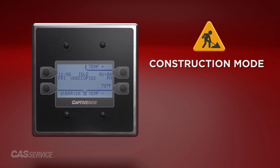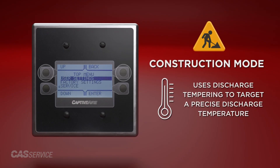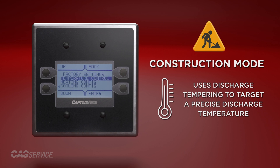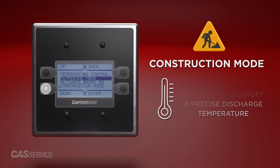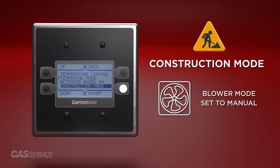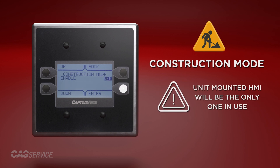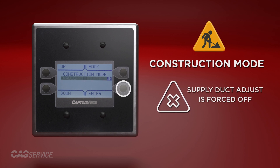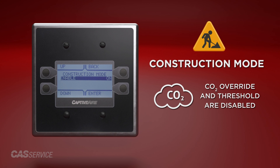Construction mode will use discharge tempering to target a precise discharge temperature and intake activation for a call of either heating or cooling. The blower mode will be set to manual, allowing for an on-off function. The unit mounted HMI will be the only one in use. Supply duct adjust is forced off, and CO2 override and CO2 threshold are disabled while construction mode is enabled.